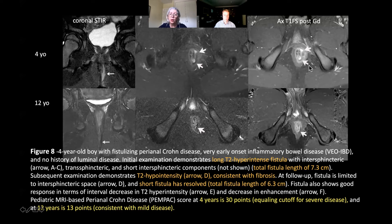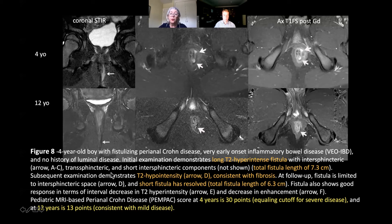On the T1 follow-up scan the signal is relatively low, and at the age of 12 there was a significant decrease in activity compared to when he first presented at the age of four. Using the PEMPAC scoring system — which takes into account length, signal, complexity, and extent of fistulae — at age four he had a score of 30 points, equating to the cut-off for severe disease. By 12 years of age that score dropped to 13, in keeping with mild disease. Whilst there has been internal validation within the Image Kids cohort, the score still needs evaluation in larger independent cohorts, but it's very promising for providing an index of activity and severity in children, who often have more severe perianal Crohn's disease than adults.